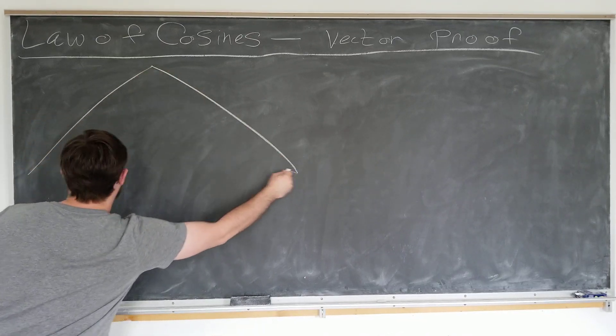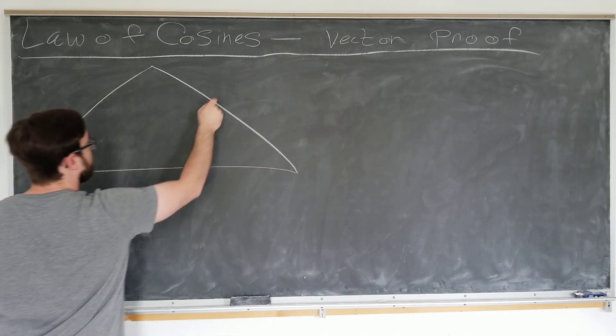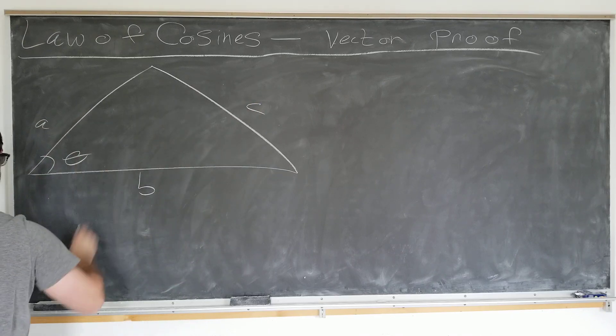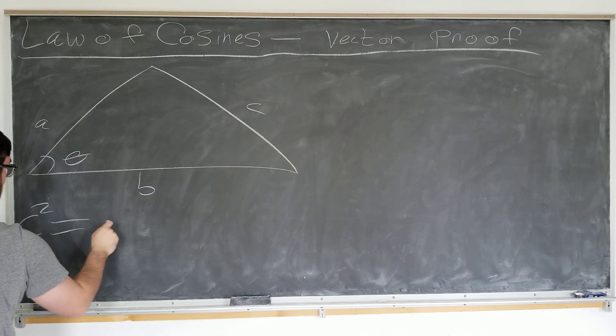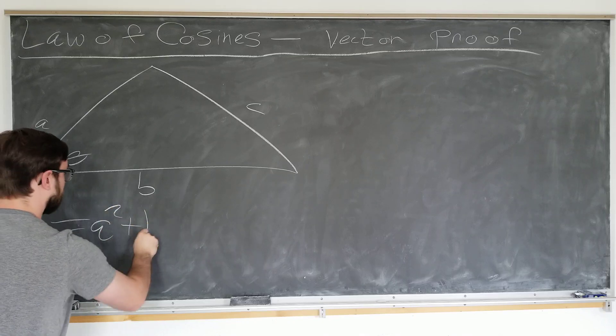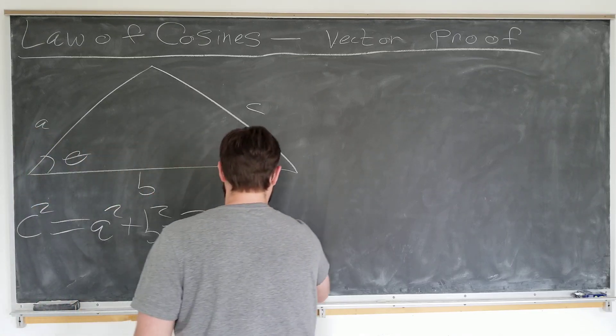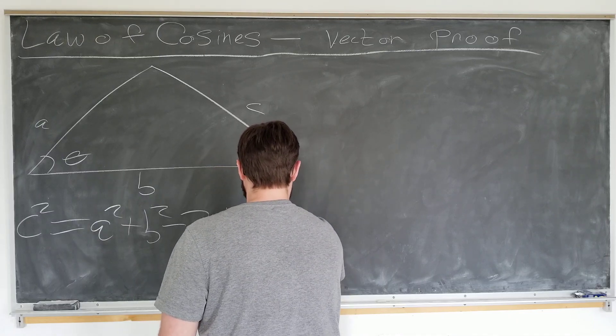Law of Cosines states that for a triangle of lengths a, b, and c with angle theta between them, the length of one side squared equals the sum of the squares of the other two sides minus 2 times the product of the sides times the cosine of the angle between them.